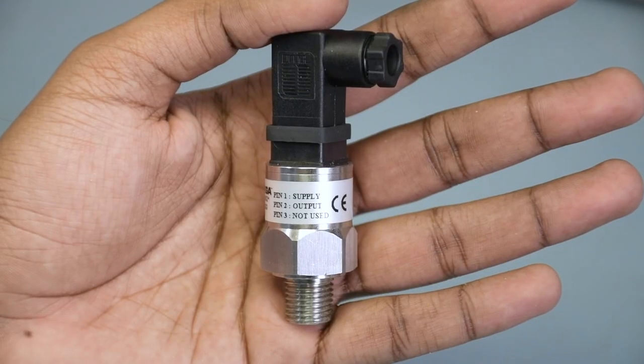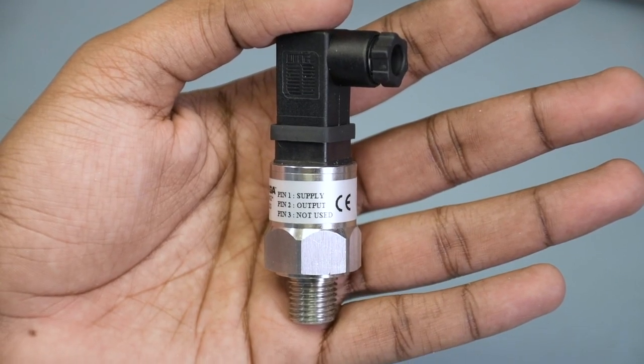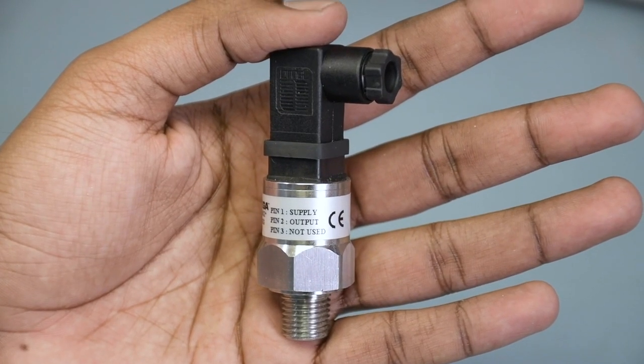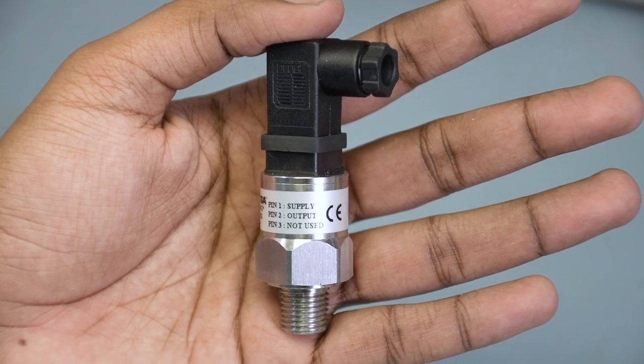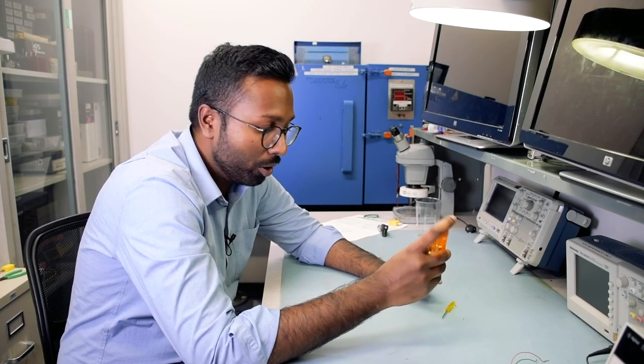Here we have a PX119-100GI, which is a 100 psi pressure transducer with a 4-20 milliamp output. It has two wires and typically you would connect those two wires in a loop circuit.